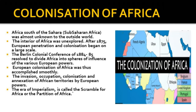Colonization of Africa: Until the last quarter of the 19th century, Sub-Saharan Africa was almost unknown to the outside world and its interior was unexplored. After 1875, European penetration and colonization began on a large scale. The Berlin Colonial Conference of 1884–85 divided Africa into spheres of influence of the various European powers. The invasion, occupation, colonization and annexation of African territories by European powers between 1881 and 1914 is called the Scramble for Africa, or the Partition of Africa.